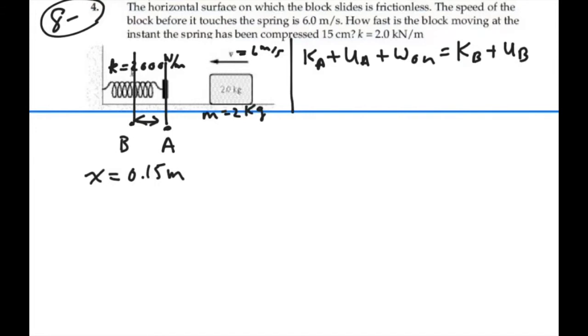Well, we know that the velocity at A is 6 meters per second. So that can help us calculate what the kinetic energy at A is. So our kinetic energy at A is going to be one-half the mass times the velocity at A squared.